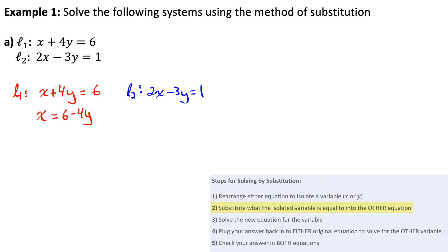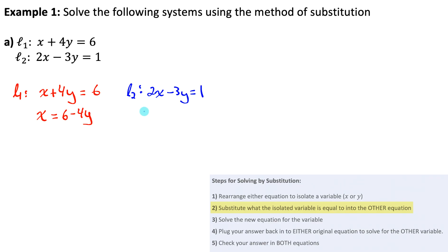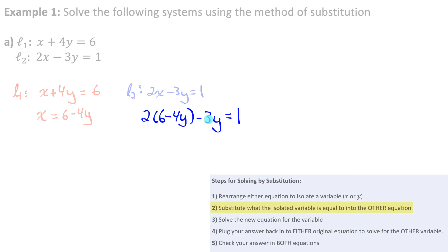Step two: take what the isolated variable equals — 6 minus 4y — and substitute it in for x in the other equation. So line two becomes 2 times (6 minus 4y) minus 3y equals 1. We're forcing the x variables to be equal and solving for the value of y that makes that true. Now we have an equation with only one variable, y, so we can solve it.